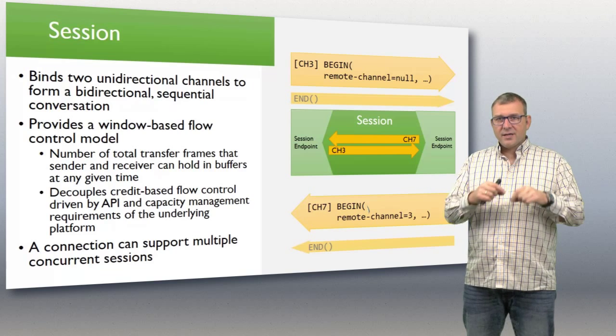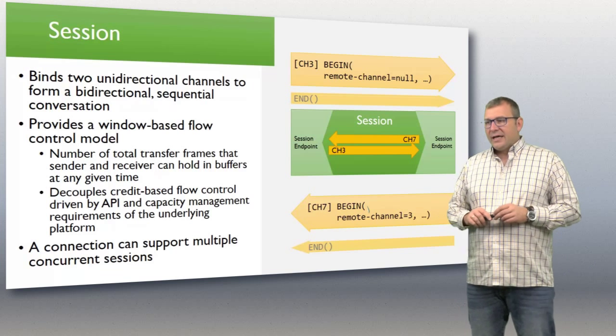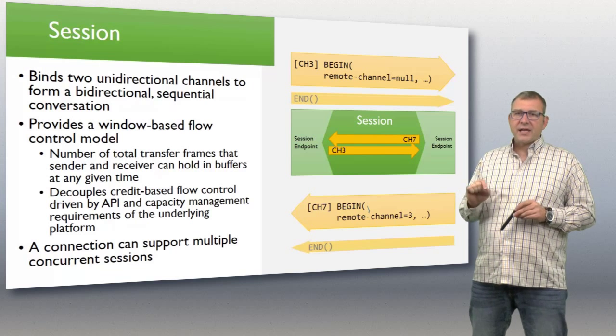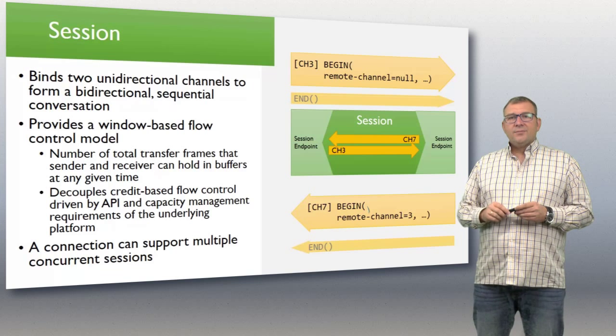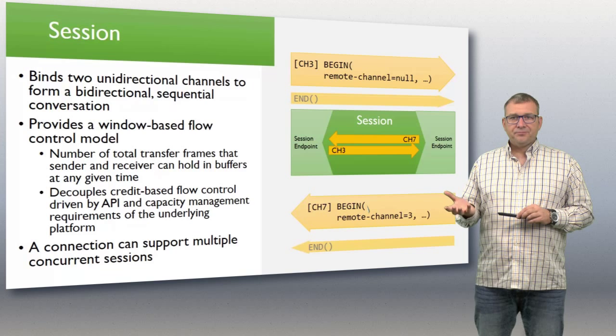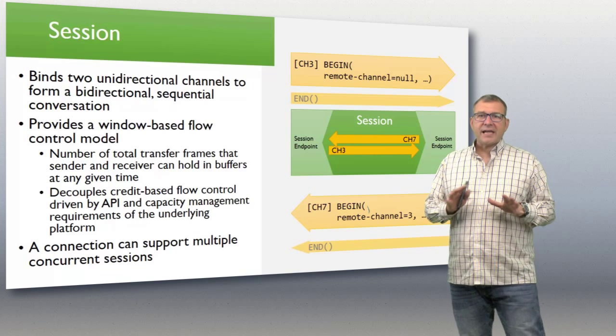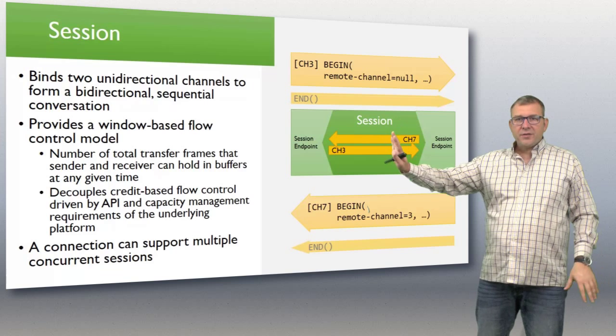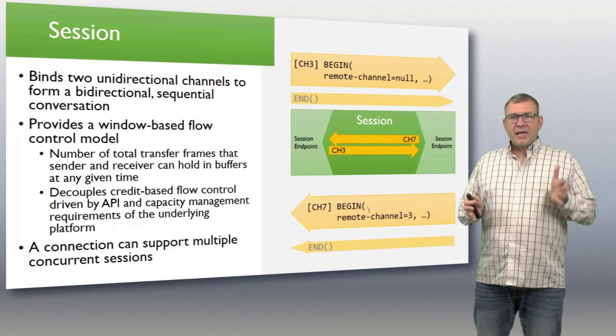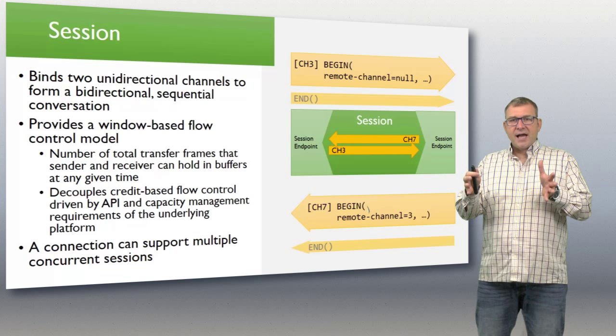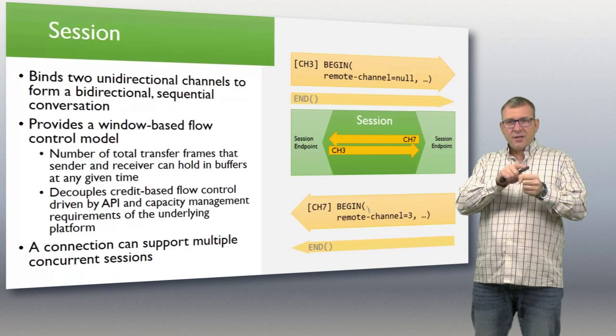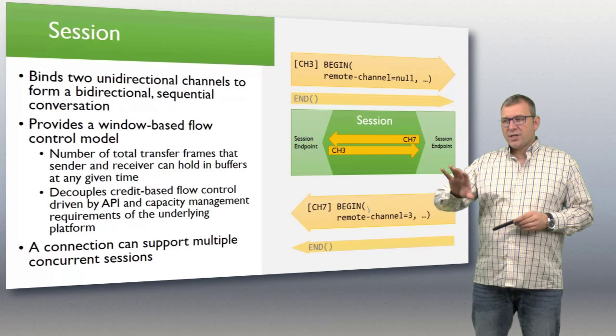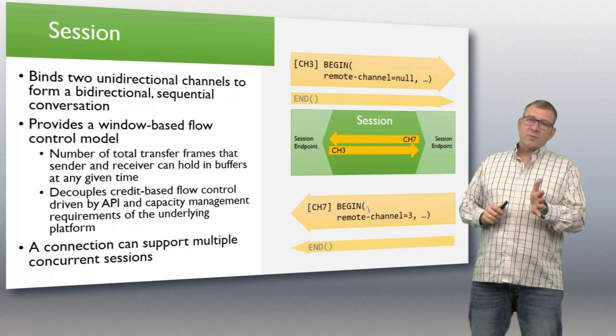It provides a window-based flow control model. That is defining the number of total transfer frames that the sender and receiver can hold in buffers at any given time. That's an important thing. Because it's a reliable protocol, AMQP, it allows the negotiation of settlement. When has a message actually been consumed? When can I remove that message from my buffer and throw it away, knowing that the other party has gotten it? Those messages need to be held in buffers on either side. As they enter the AMQP stack, they need to be held in buffers until they are settled on one side and until it's settled on the other side. The size of those buffers is being negotiated here in the session setup, which is, talking about IoT, very important.